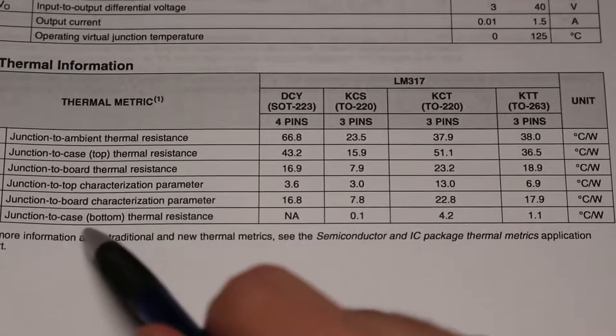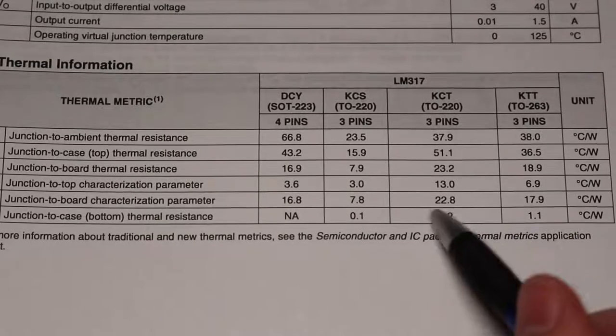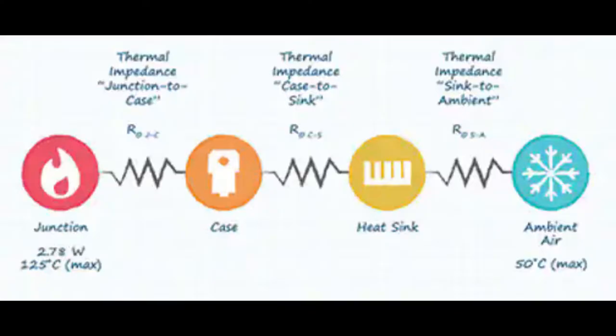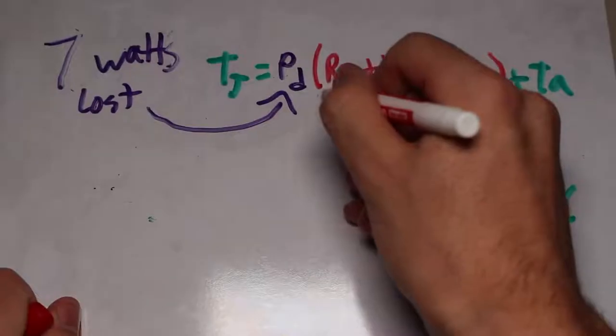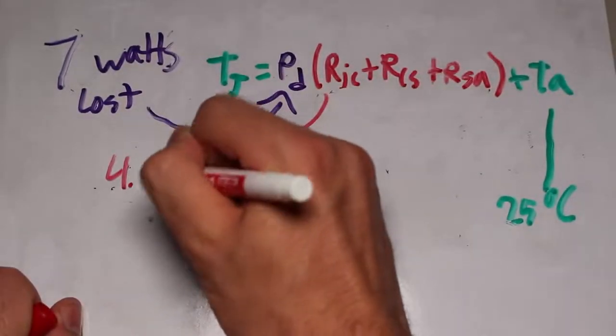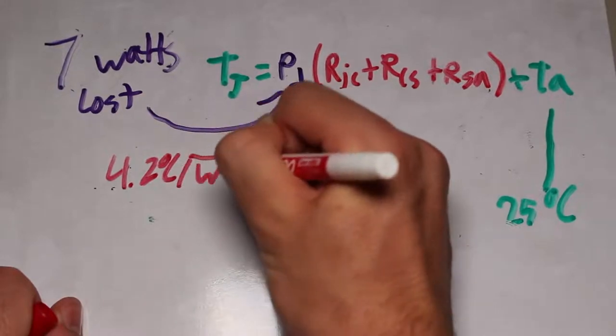If we are using a heatsink, we need to select a different value from the datasheet. This time, we are looking for the junction to case thermal resistance. For the TO220 package, we have a value of 4.2 degrees per watt. We just need two more values, the case-to-surface and the surface-to-air resistances.